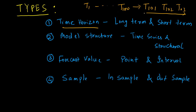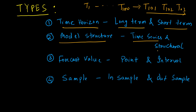Whereas sometimes there would be a long-term forecast — further away, let's say 6 months or 12 months further from the current period. So based on the time horizon for which you are doing the forecast, these are divided into long-term forecasting models and short-term forecasting models. The other way of classifying models is by model structure — time series and structural — which we have already discussed.